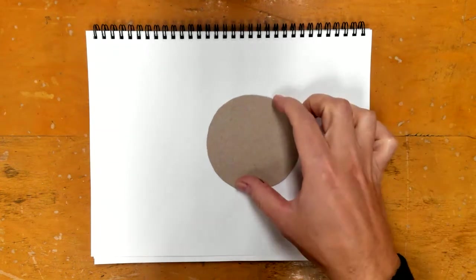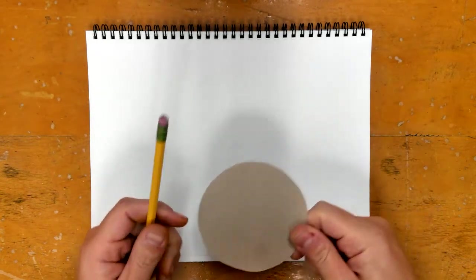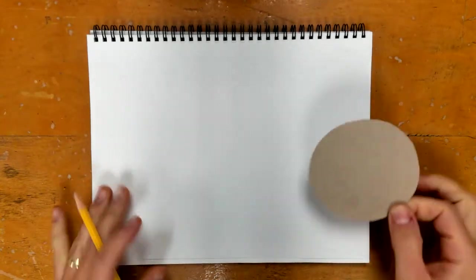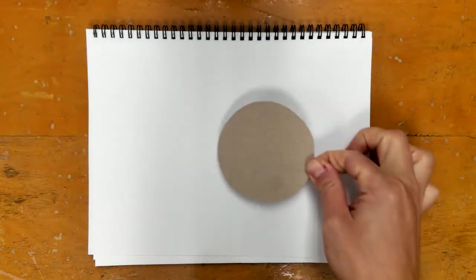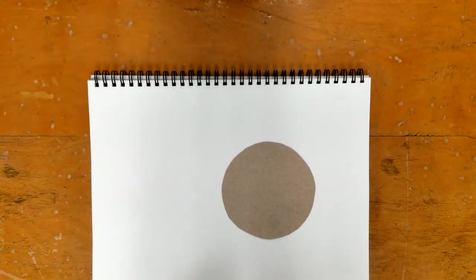Welcome first grade. Today you will need a pencil and a circle tracer to start. You are going to take the circle tracer and somewhere along the middle you're going to put down your first circle.